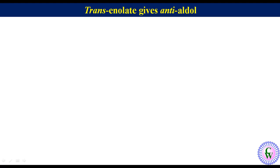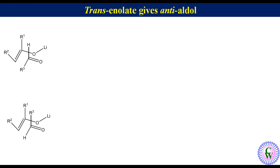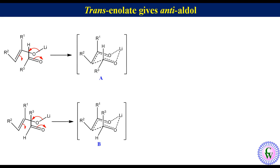Now let's see how trans enolate preferentially gives anti-aldol. We can draw the trans enolate like this. There are two ways in which the aldehyde can orient — in one orientation H is axial, and in the other R3 is axial. Nucleophilic addition will generate six-membered chair-like transition states A and B. Transition state A with equatorial R3 is more stable, while transition state B with axial R3 is less stable because of a stronger 1,3-diaxial interaction between R1 and R3. So the reaction will proceed mainly through transition state A.